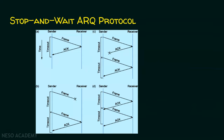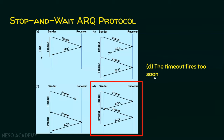In scenario D, the frame is not lost and the acknowledgement is also not lost, but the timeout fires too soon. Before getting the acknowledgement, the timer expires. The sender has sent the frame and the receiver has sent the acknowledgement, but due to some delay in the network, the acknowledgement reached the sender late — after the timer already expired. Once the sender finds the timer has expired, it retransmits the frame again and tries to get the acknowledgement for that packet. This is the situation where the timeout fires too soon.